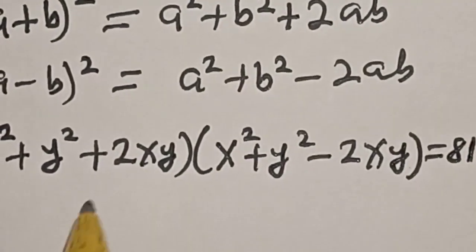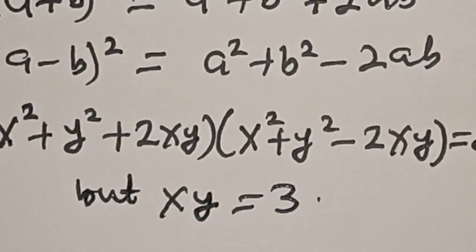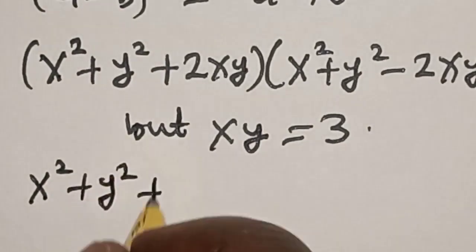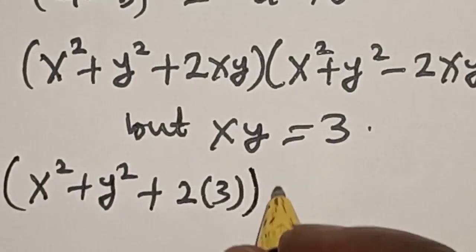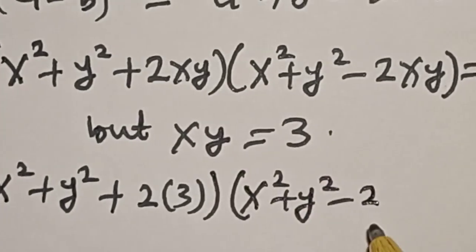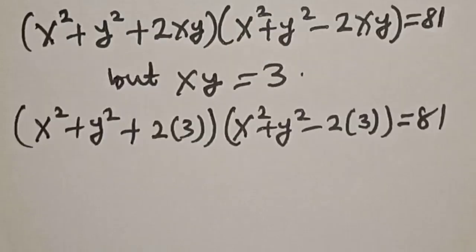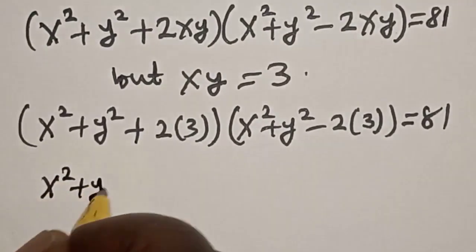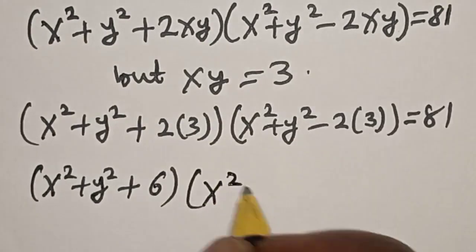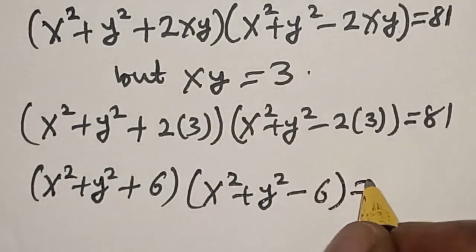Now we know that xy is equal to 3. So substituting, we have x squared plus y squared plus 2 times 3, multiplied by x squared plus y squared minus 2 times 3, is equal to 81. This simplifies to x squared plus y squared plus 6, multiplied by x squared plus y squared minus 6, is equal to 81.